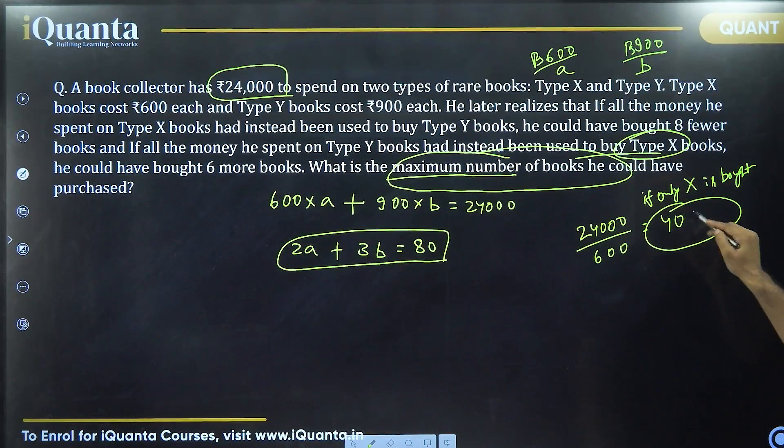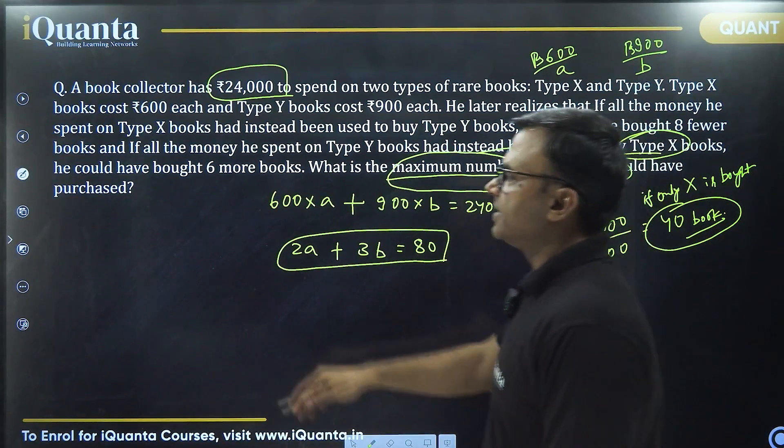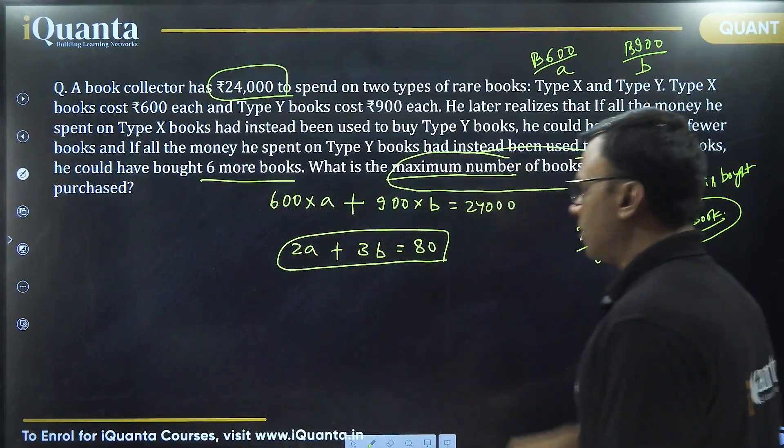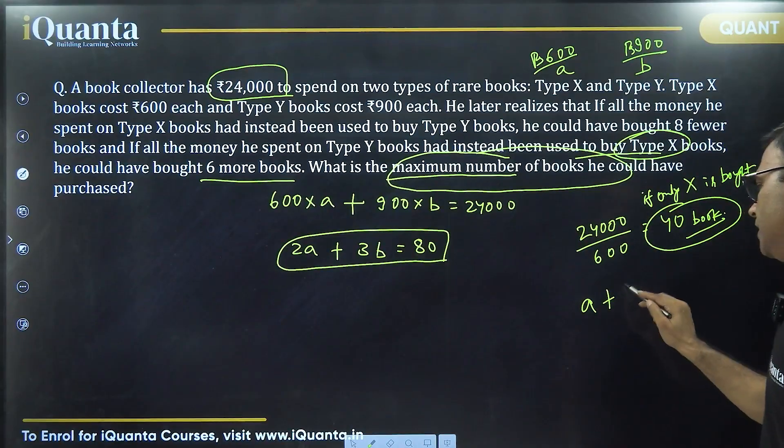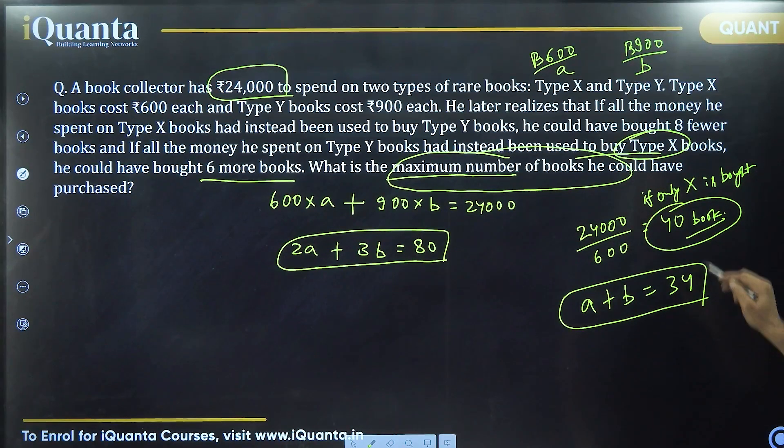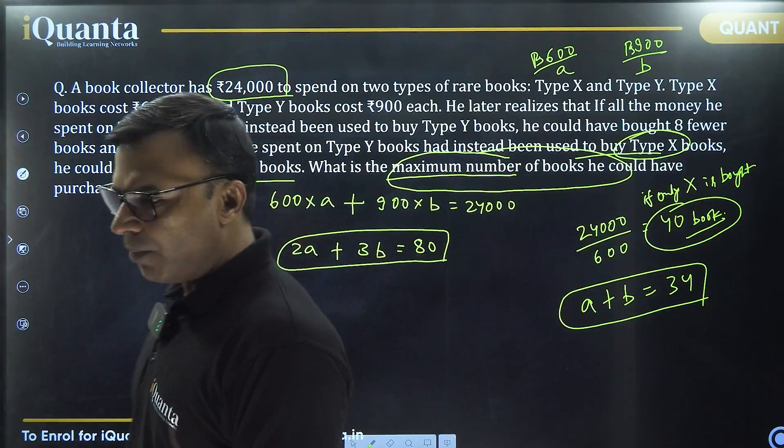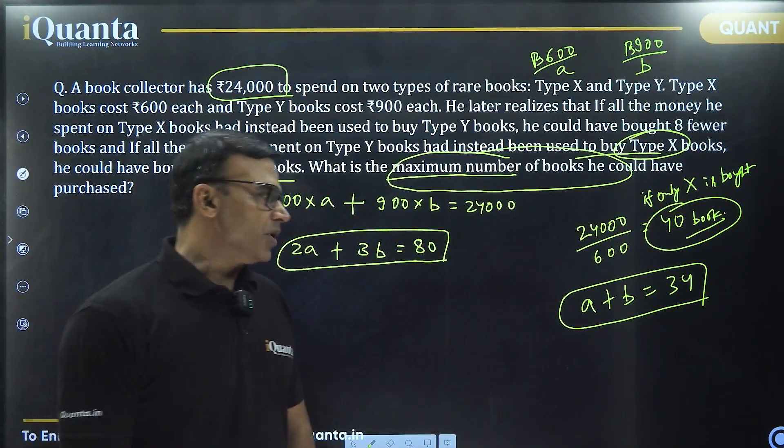So 40 books. This is 6 more. That means the actual number of books that was bought, A plus B, should be 6 less than 40, that is 34. This 40 should be 6 more than the total number of books actually bought. So A plus B equals 34, 2A plus 3B equals 80 for maximum number of books.